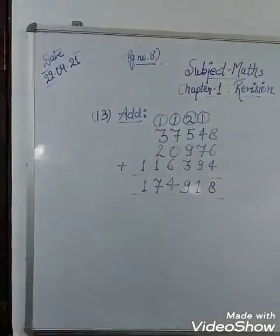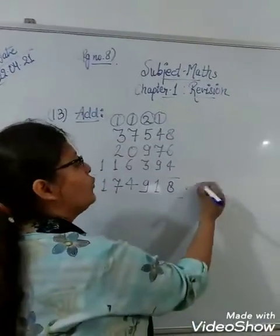So your clear answer is 1,74,918. This is how you can do your addition.